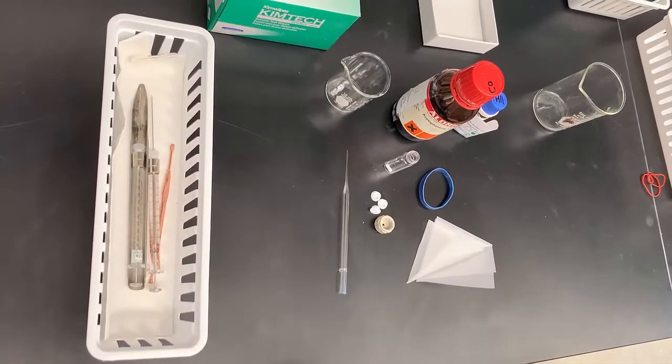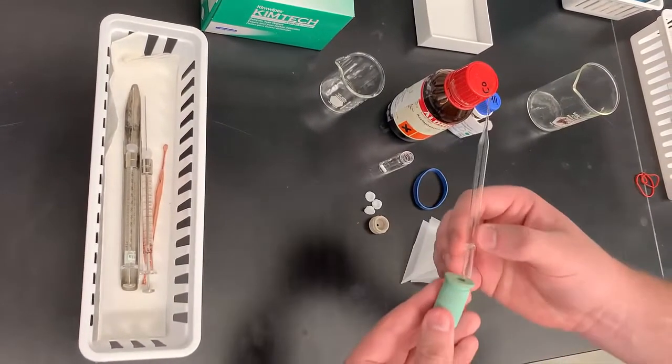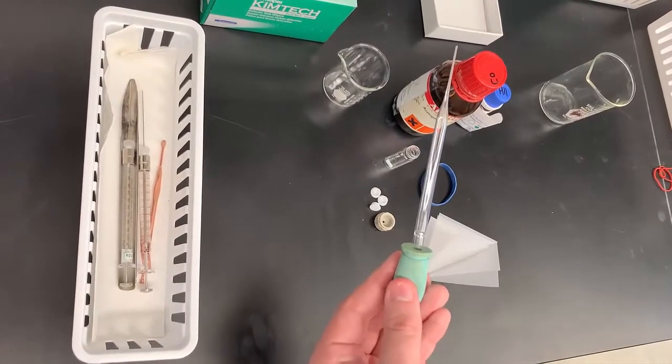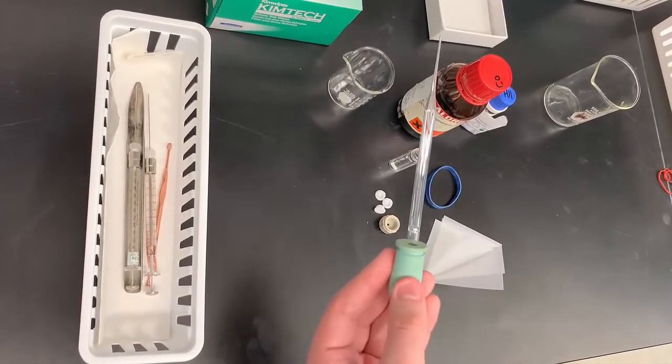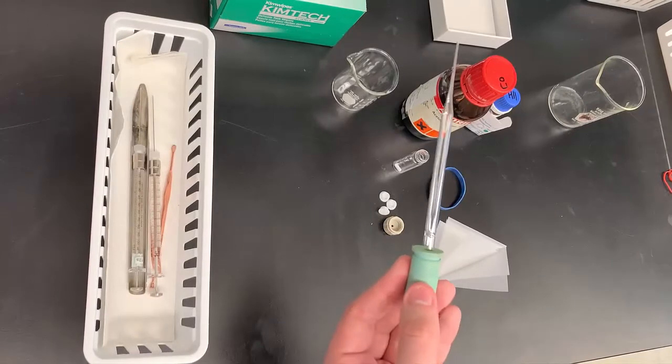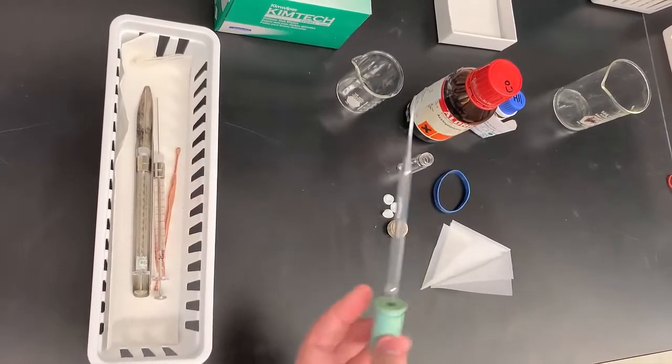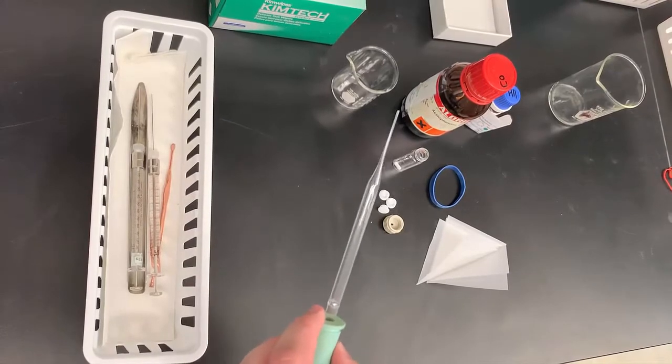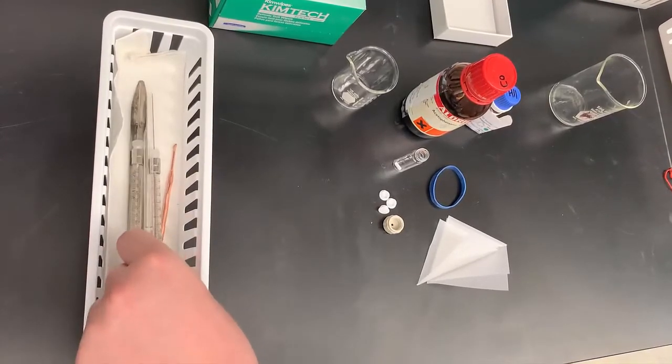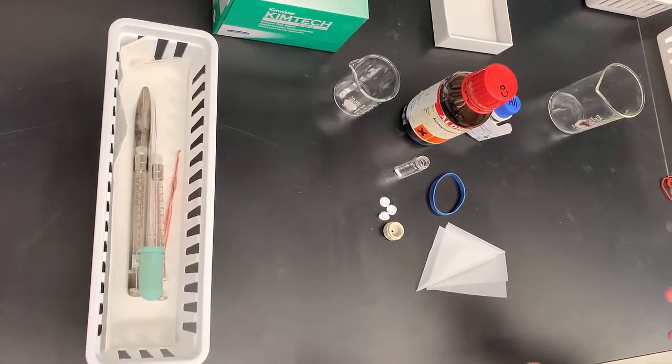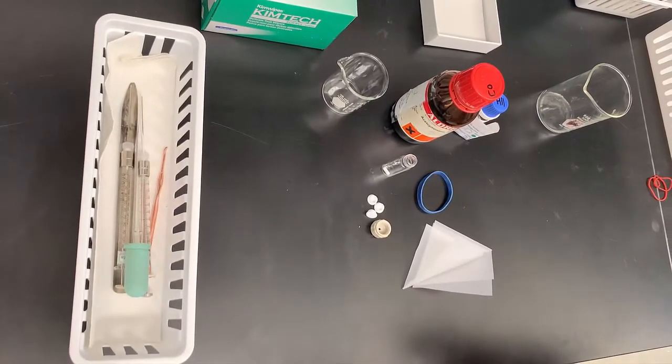You will need a Pasteur pipette with a bulb, which you can put together before entering the glove box. This is used to dispense our toluene and one large bulb is usually all you need. Make sure that when you're putting things in the basket, all things with sharp ends are pointing the same direction so that you know which direction to retrieve from the glove box.